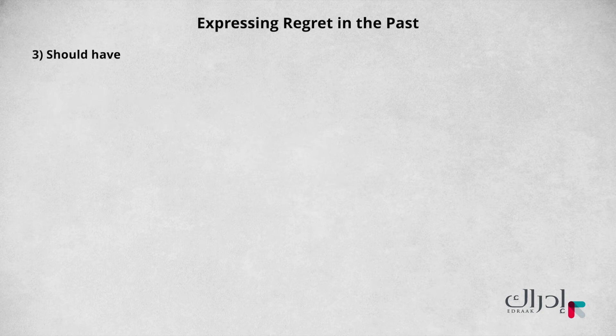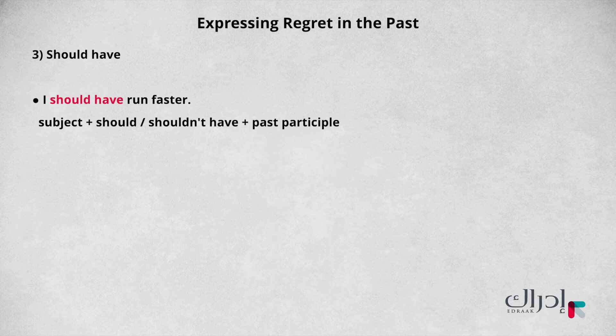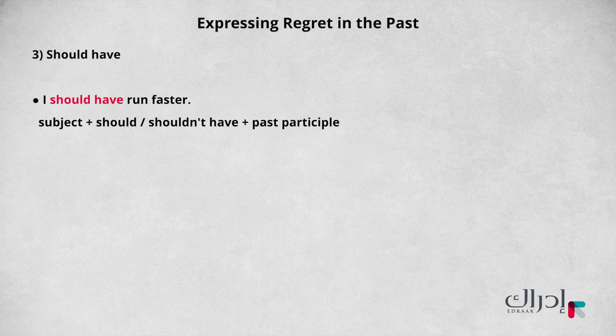And then at last, we have should have. Let's look at this example: I should have run faster. We have the subject followed by should have. Of course, if the sentence is in the negative form, you can use shouldn't have, and then the past participle of the verb, followed by the rest of the sentence. We can also use this format to express regret for someone else's actions.